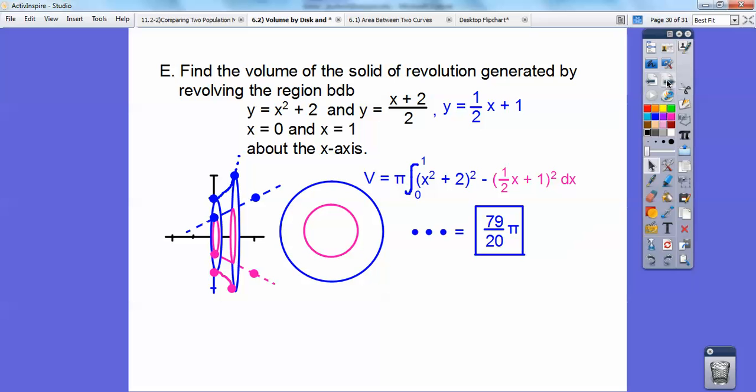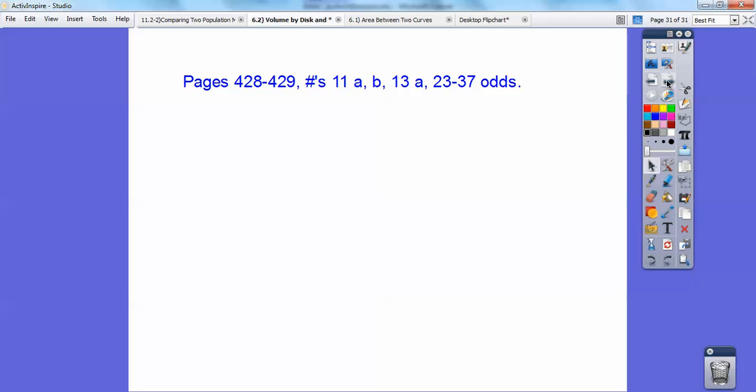And dot, dot, dot, save some time. There's my answer, 79 pi over 20. So, give it a shot. Outer minus inner or righty minus lefty if it's going around the y-axes right there. And if you're in my calculus class, I'm going to sign you. That is your homework. Take care.